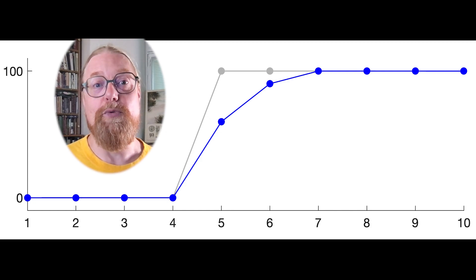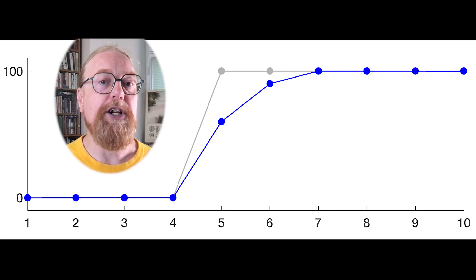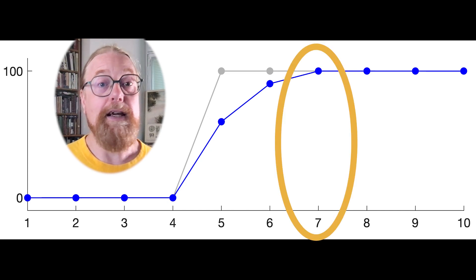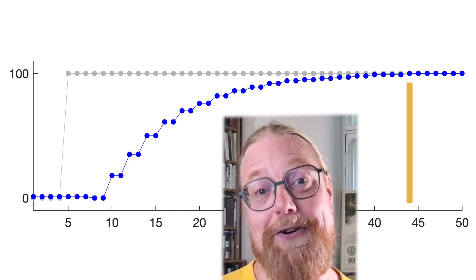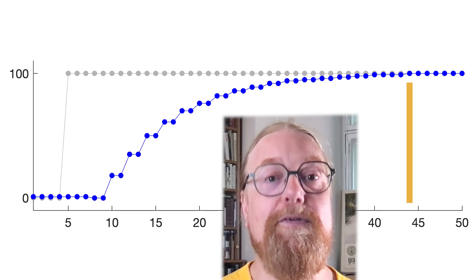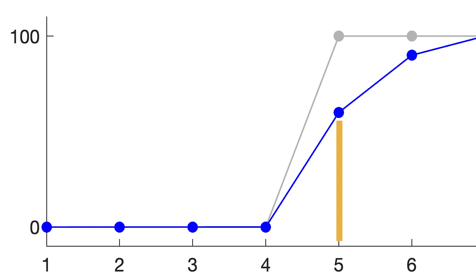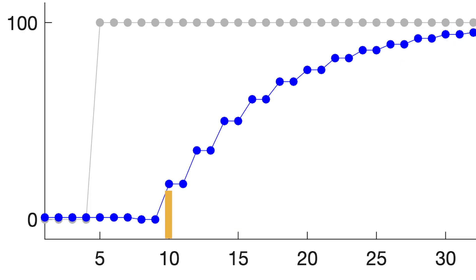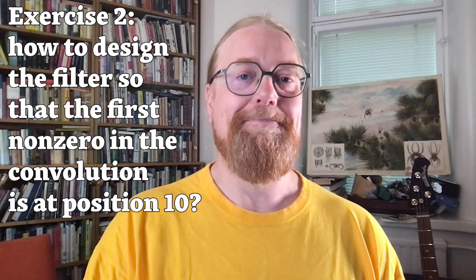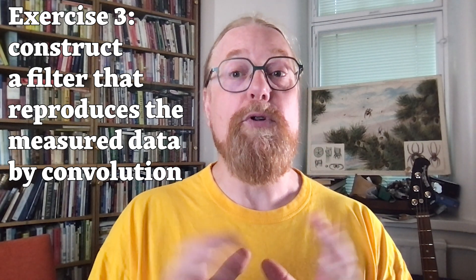However, there are crucial differences between my mathematical explanation and the actual measurement. First of all, in the simple model with a filter with only three non-zero elements, the temperature reached 100 degrees in only 7 seconds. In contrast, the actual measurement needed 44 seconds to go up to 100, so a longer filter is needed for modeling the real data — but how long exactly? Also, in the simple model, the blue graph jumped up from zero already at 5 seconds, while the real data did the jump in 10 seconds. How should this difference show up in the filter? Can you construct a filter that reproduces the measured data by convolution? Let me know in the comments below. I will include the measured numbers in the video description.